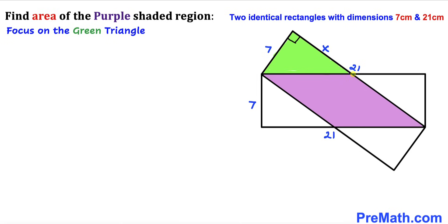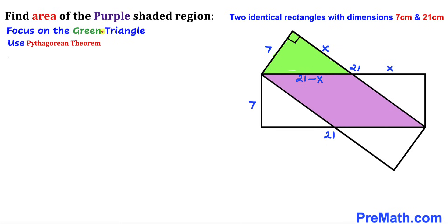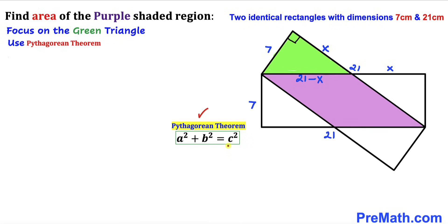By symmetry, this side length has got to be x as well. And since we know that this whole length is 21, this remaining length has got to be 21 minus x. Now we are going to use the Pythagorean theorem on this green triangle to solve for x. Here's the Pythagorean theorem: a squared plus b squared equals c squared.